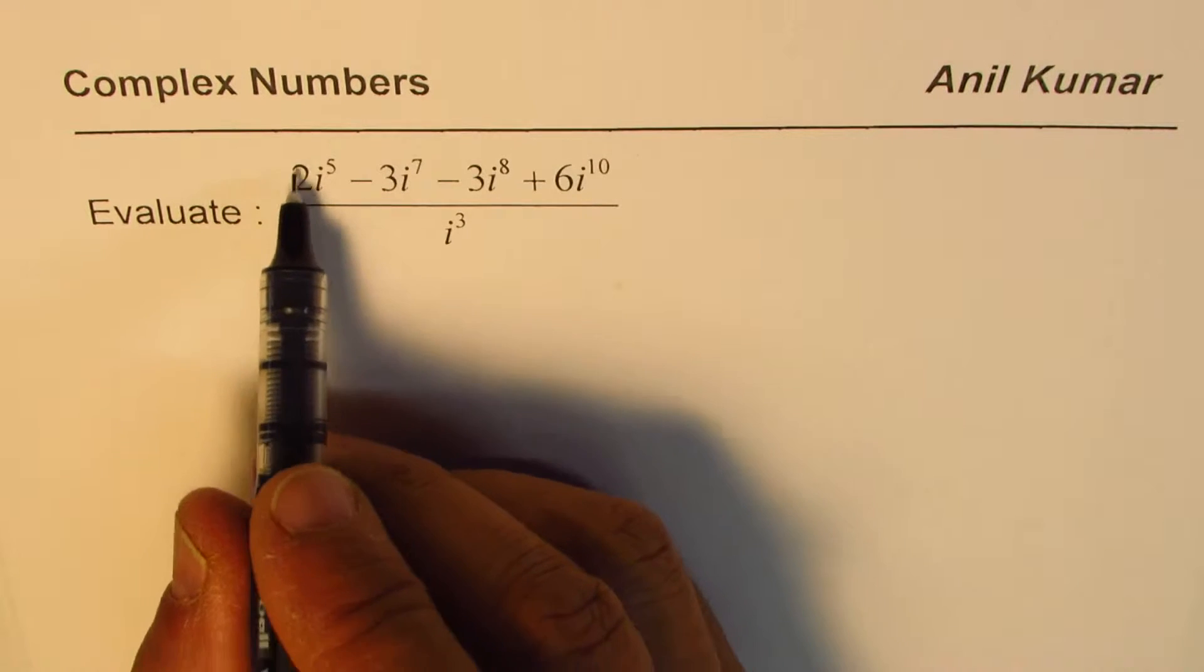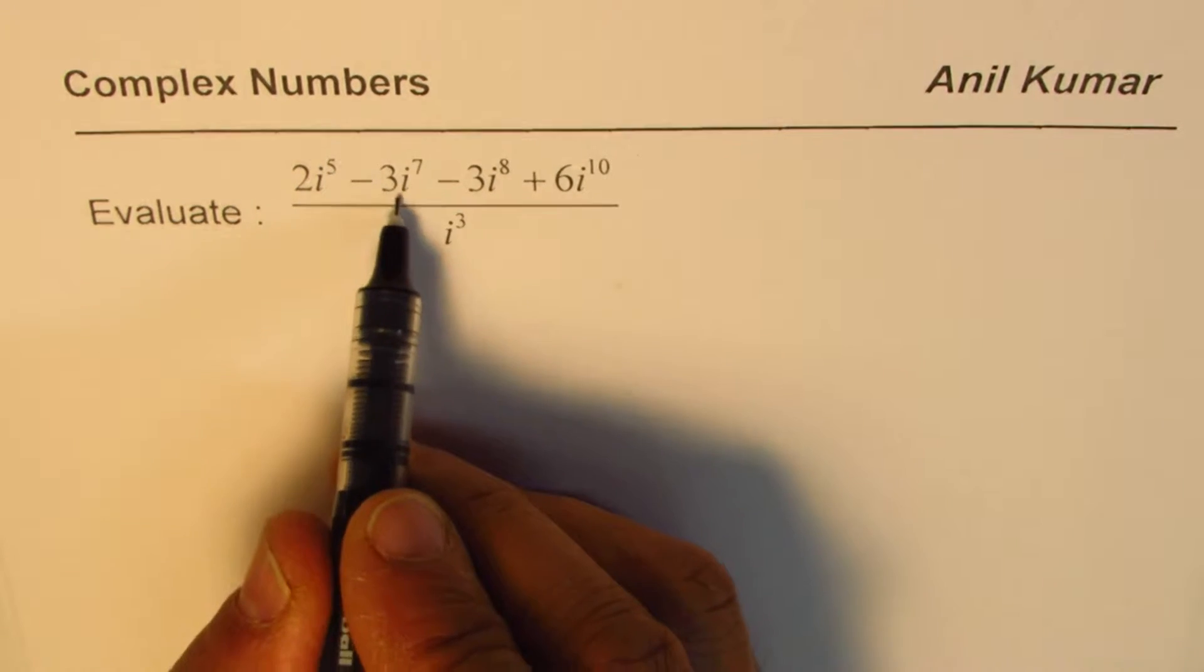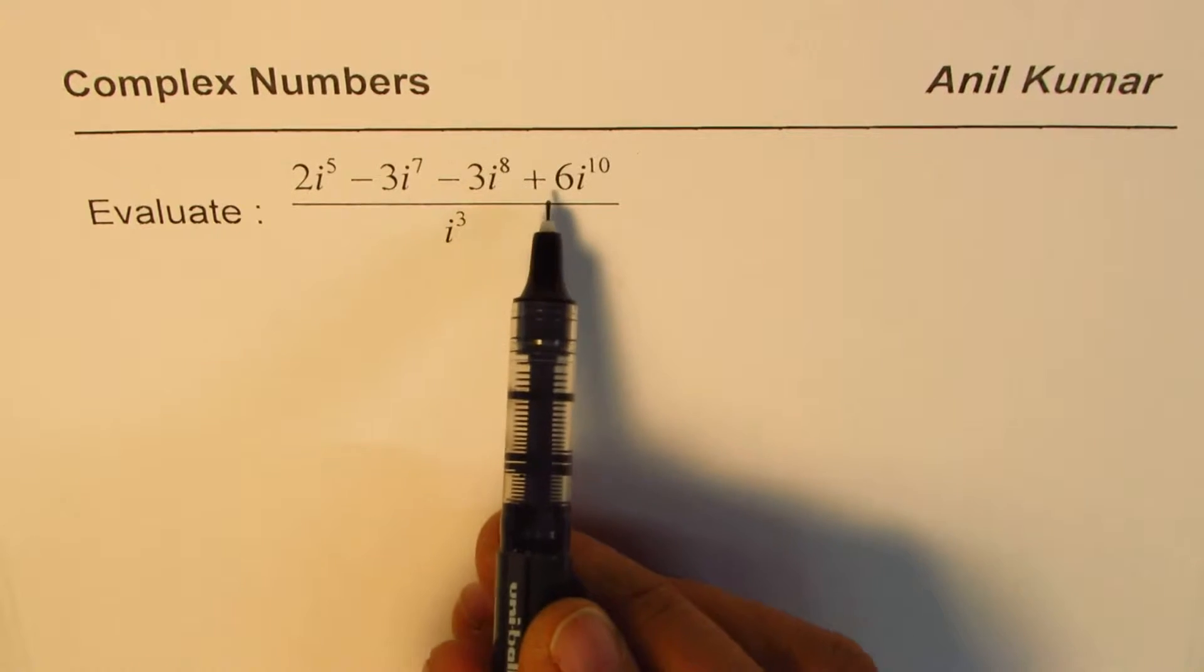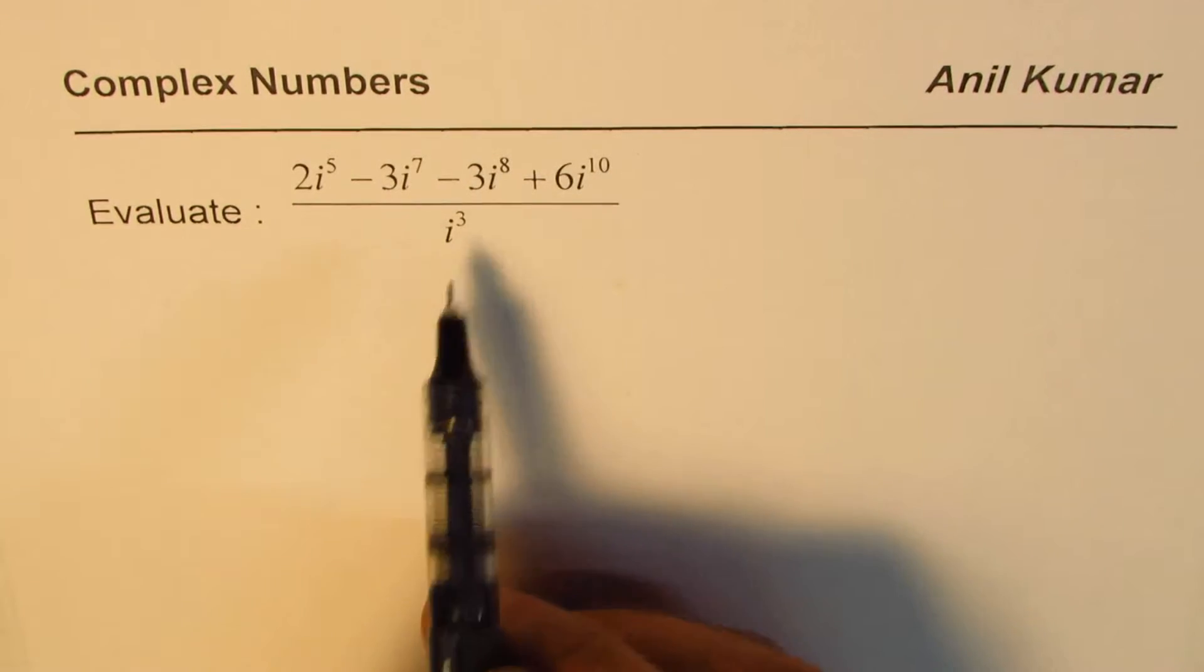We are given 2i^5 - 3i^7 - 3i^8 + 6i^10, everything divided by i^3.